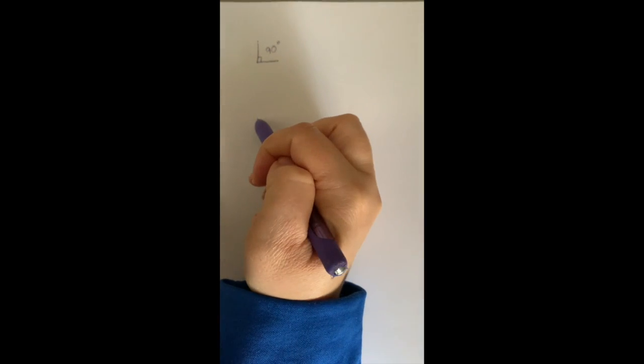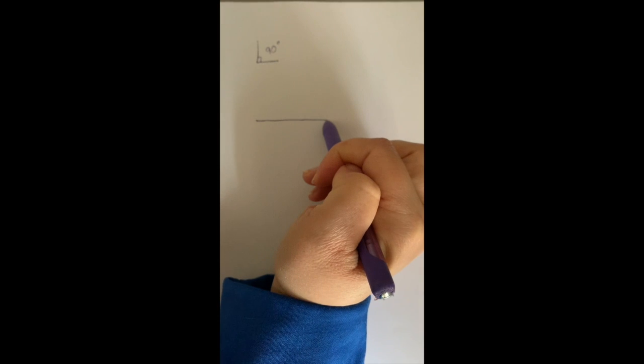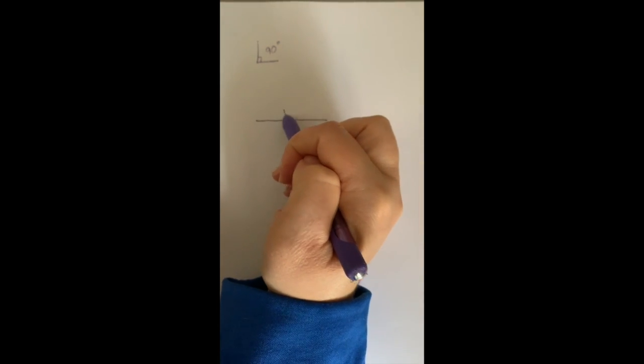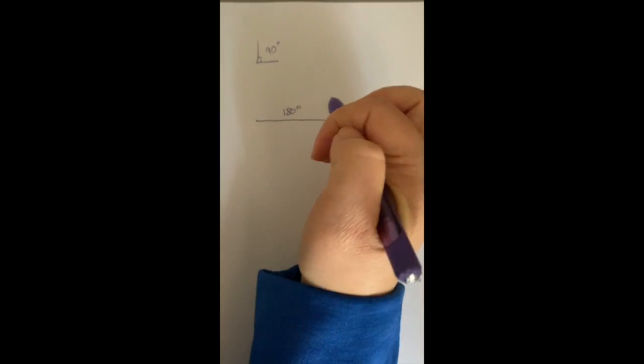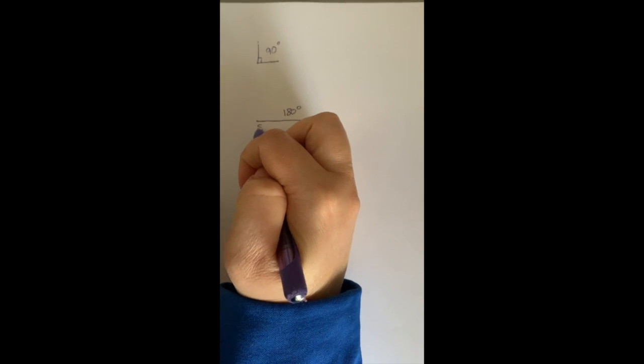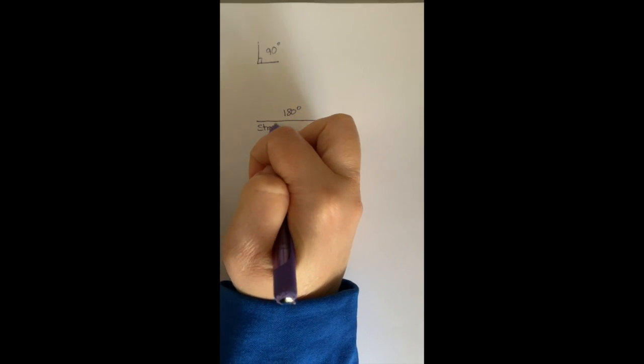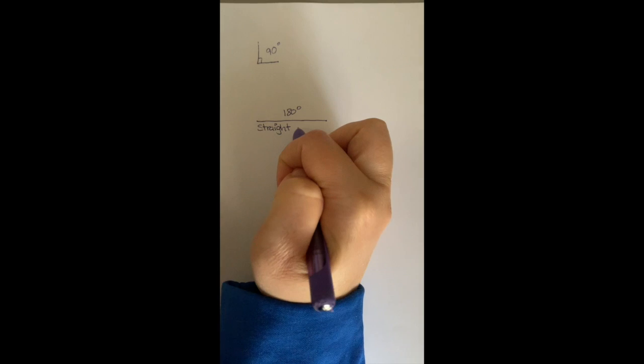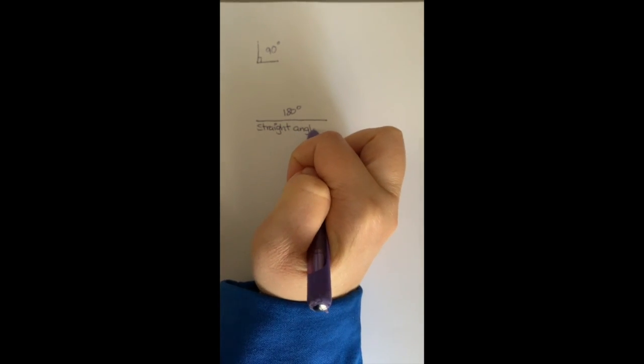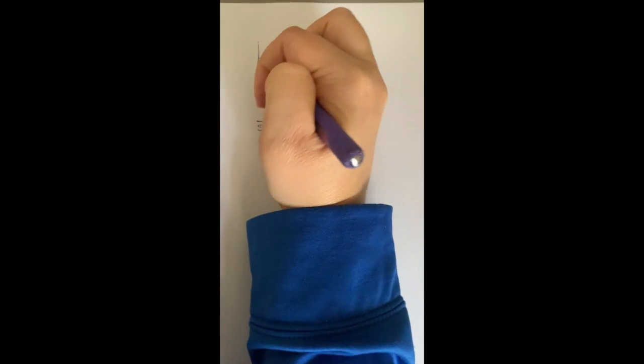And then you have your straight angle, which is really just a straight line, and that's 180 degrees. And let me write down what it is. So a straight angle, and a right angle.